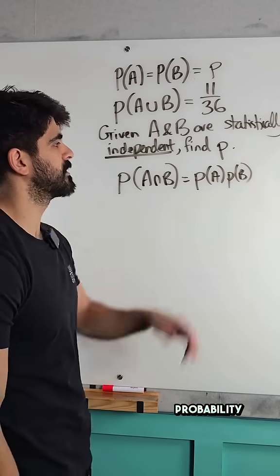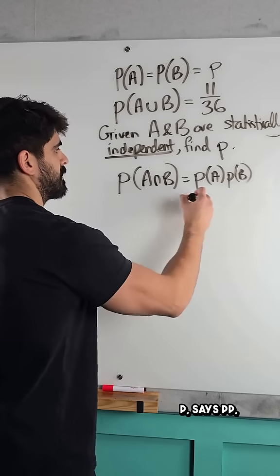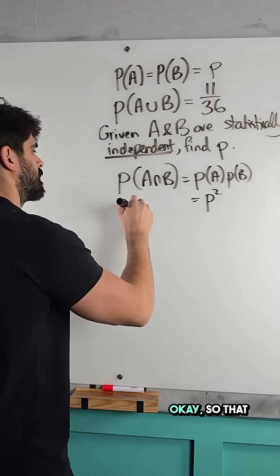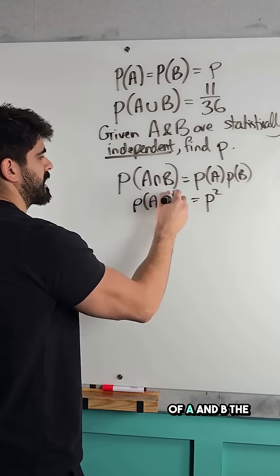Well, probability of A and probability of B are both equal to P. So it's P times P, which is P squared. So that is probability of A and B, the intersection.